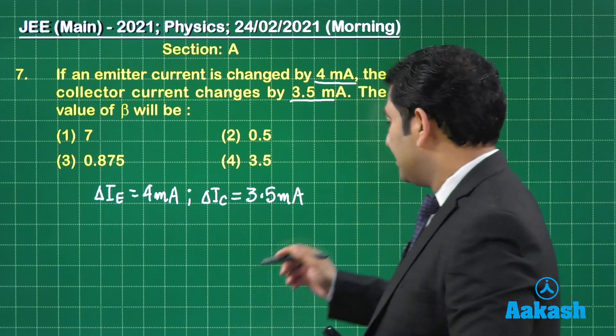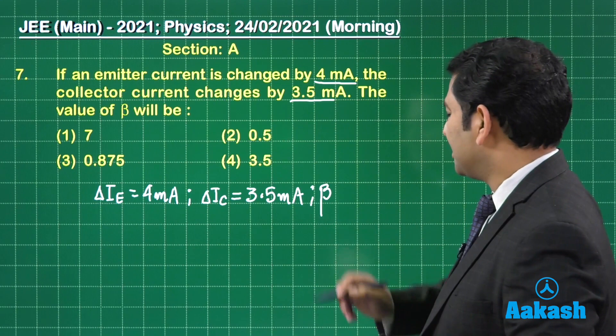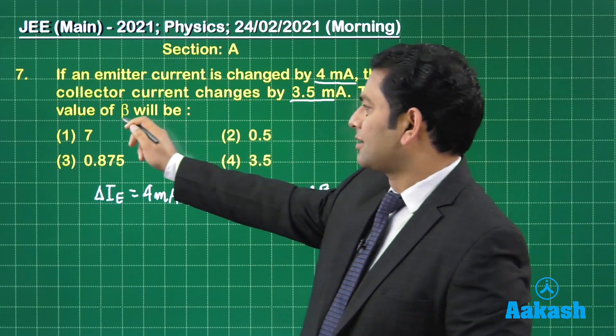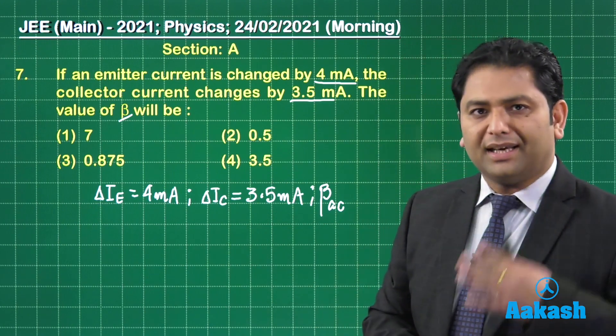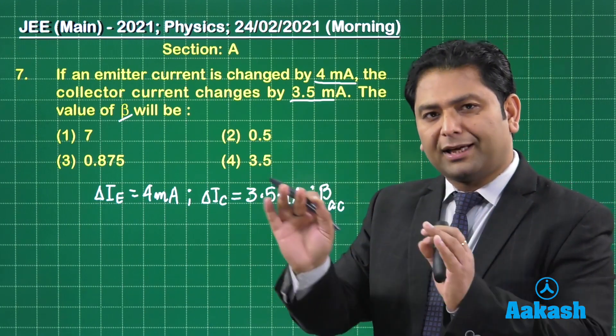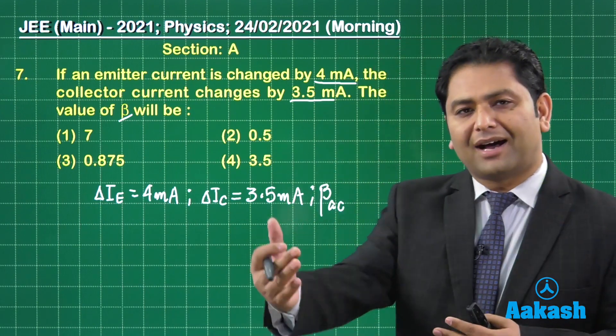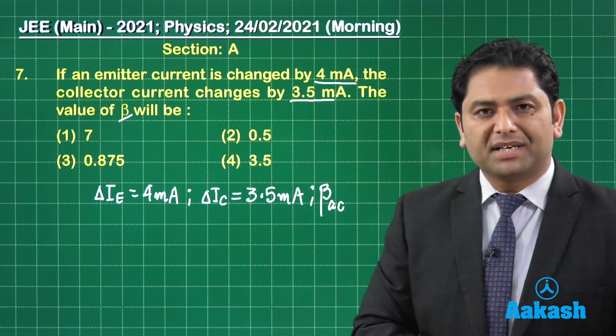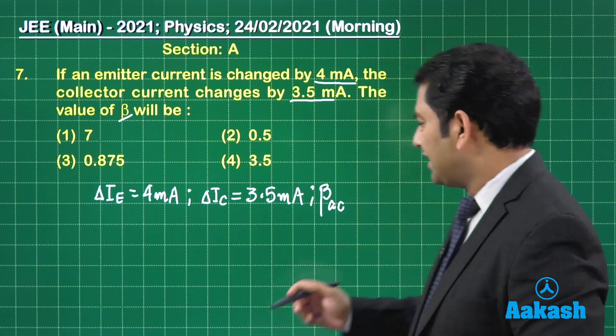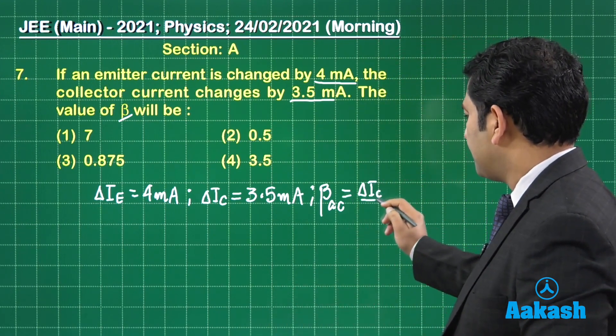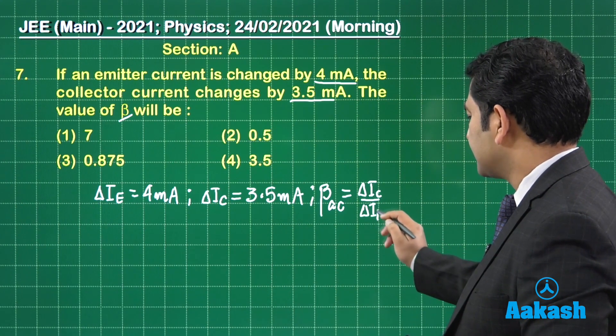Precisely speaking, that's beta AC. Since the question did not specifically talk about beta DC or beta AC, we need to be careful. Looking at the data, the question is actually talking about beta AC. So beta AC by definition is delta IC by delta IB.